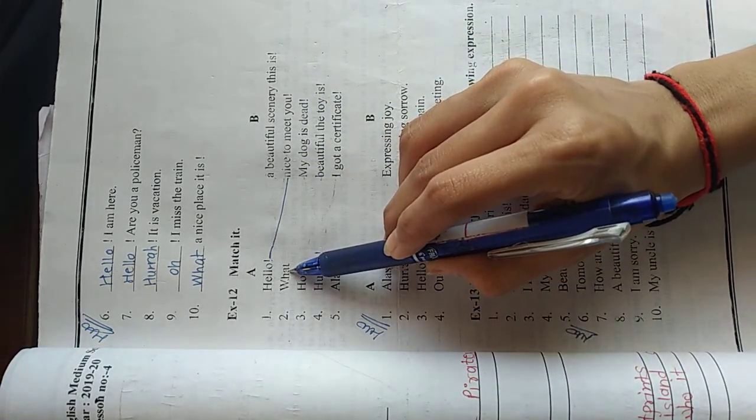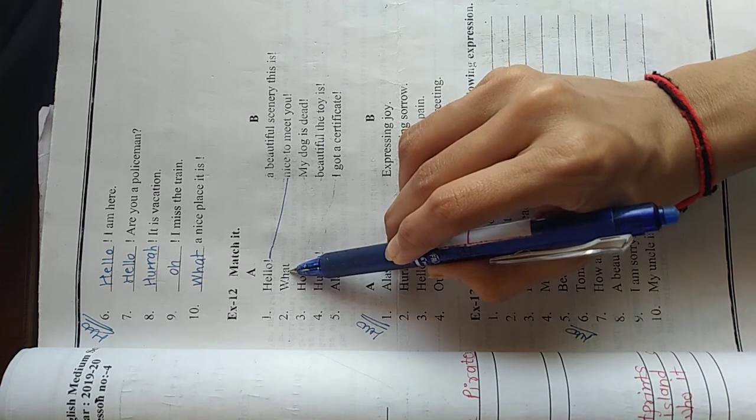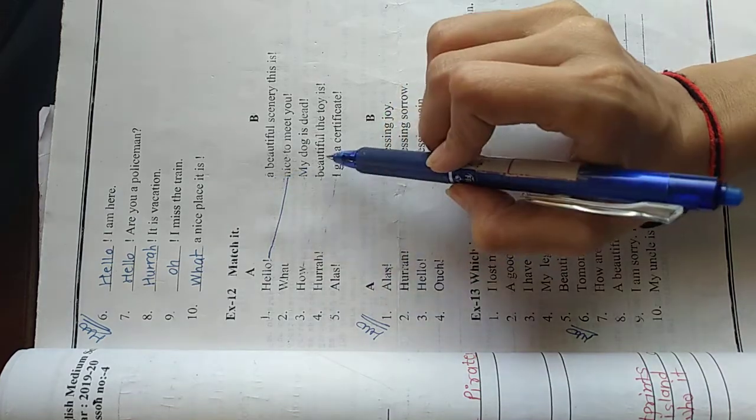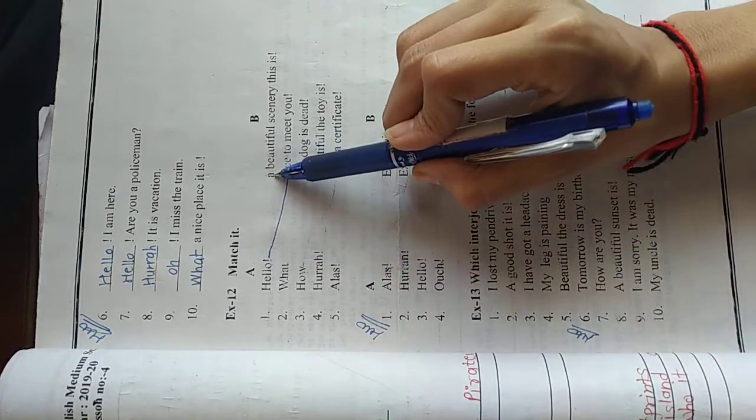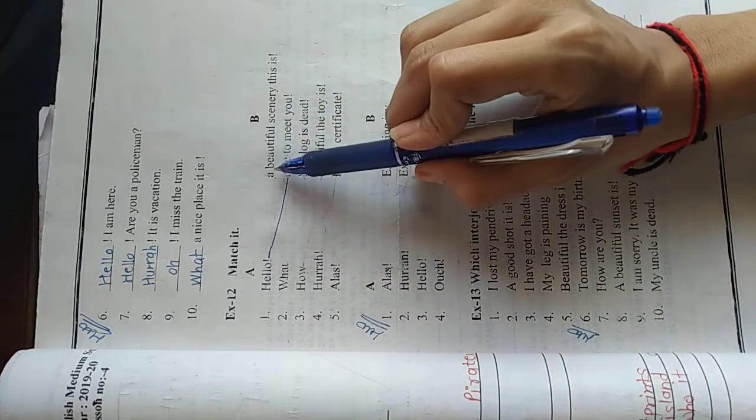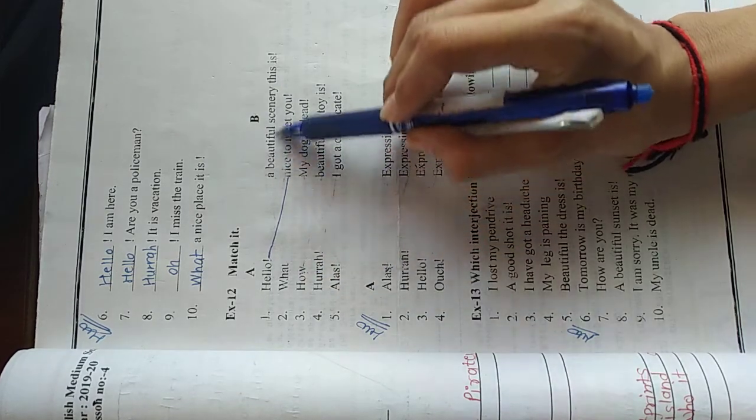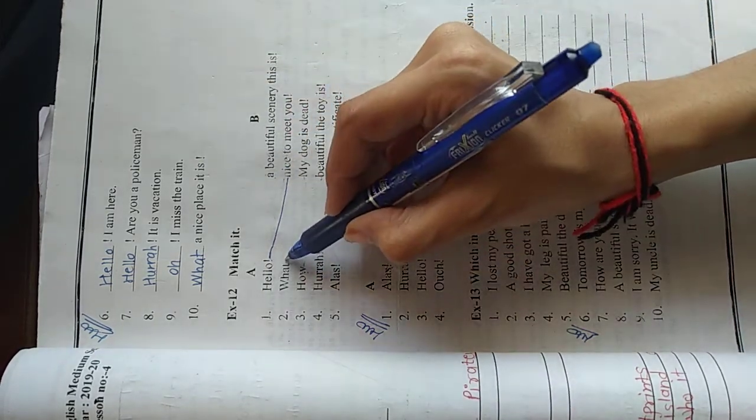What. Now look at here. Whenever what is given the next letter should be article. Now look at this sentence. A beautiful scenery this is. A is article. So match what, a beautiful scenery this is.